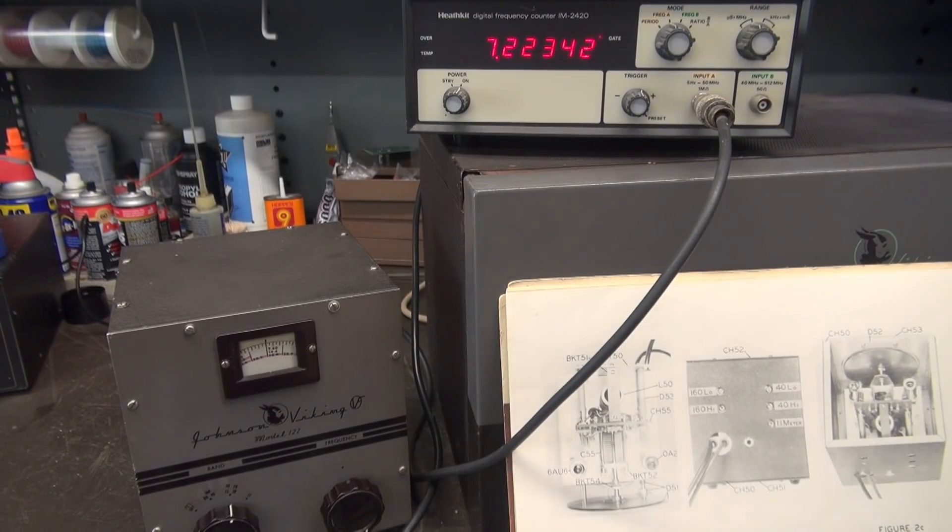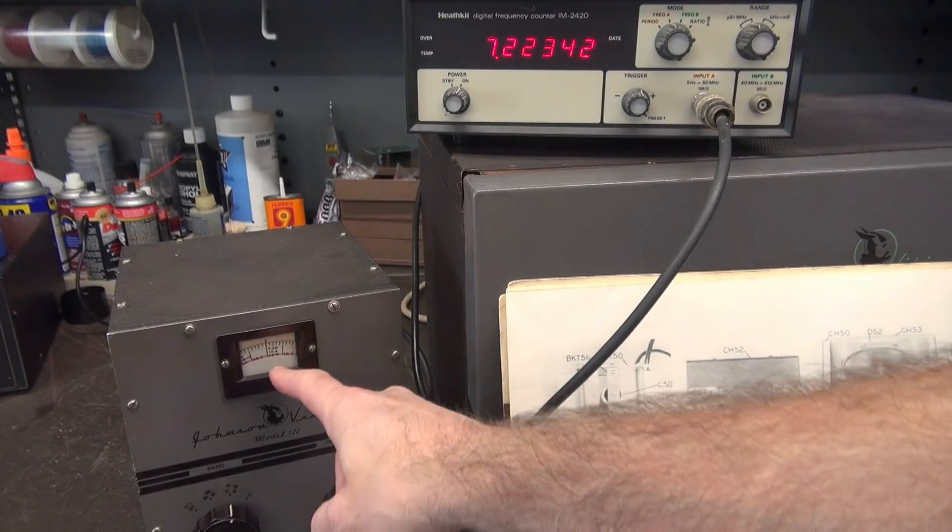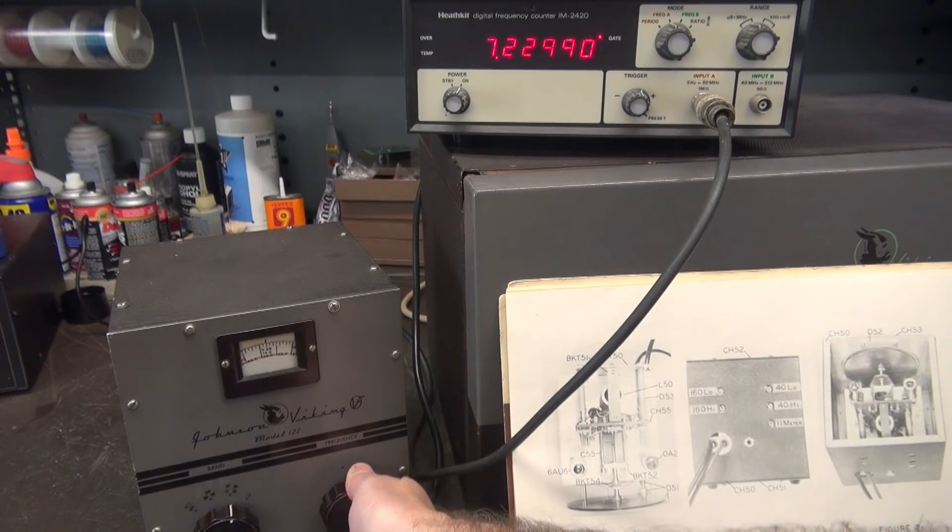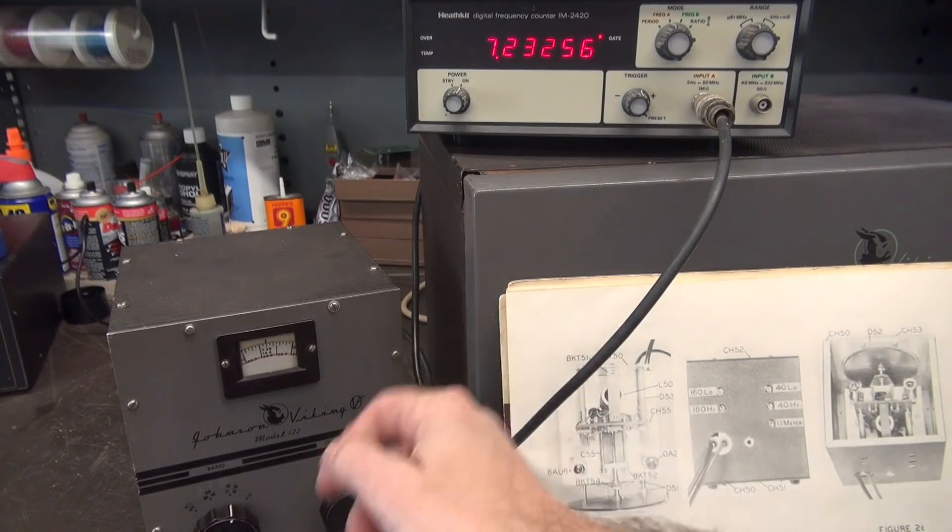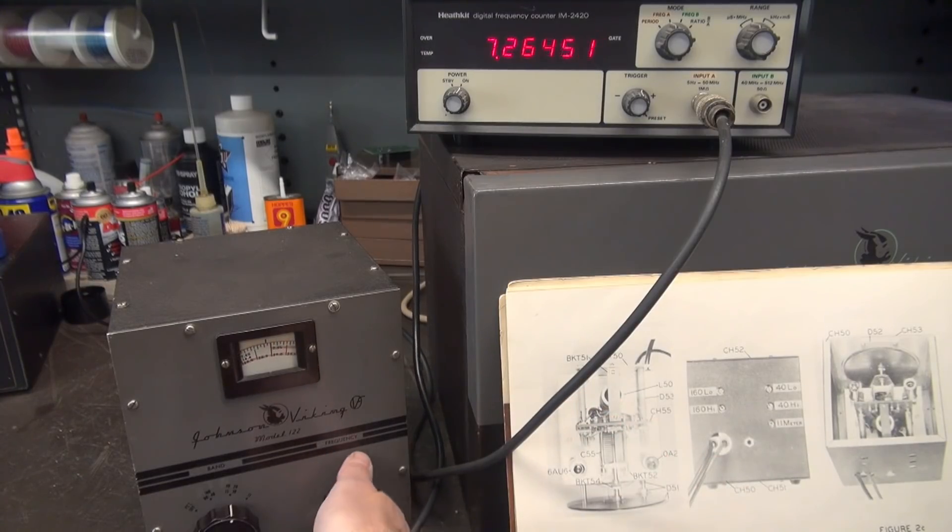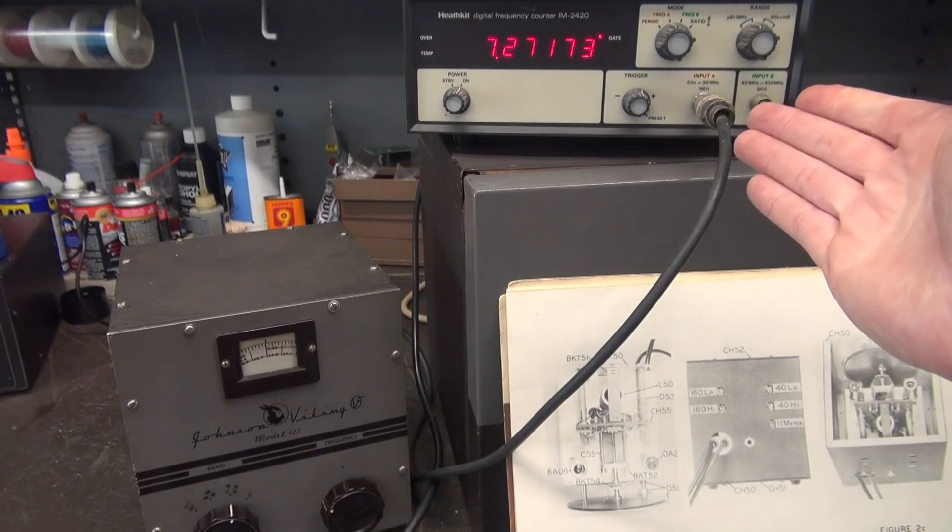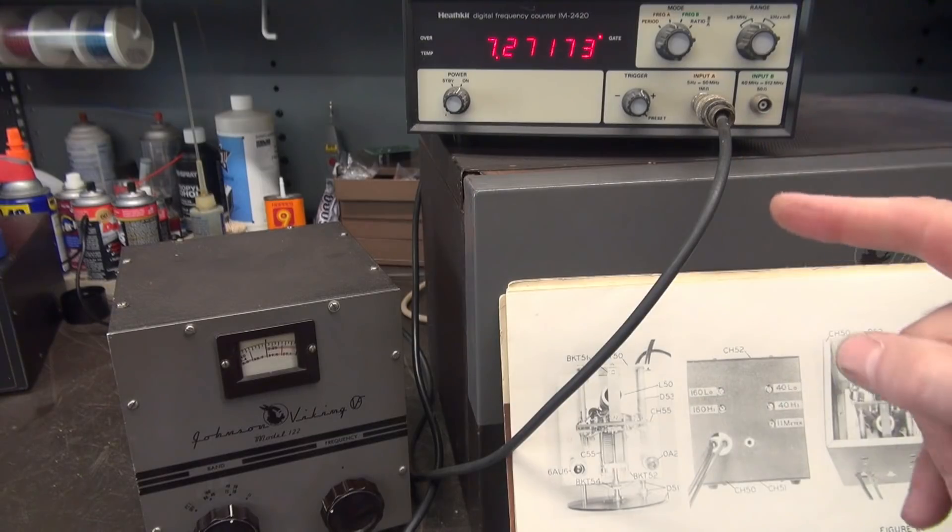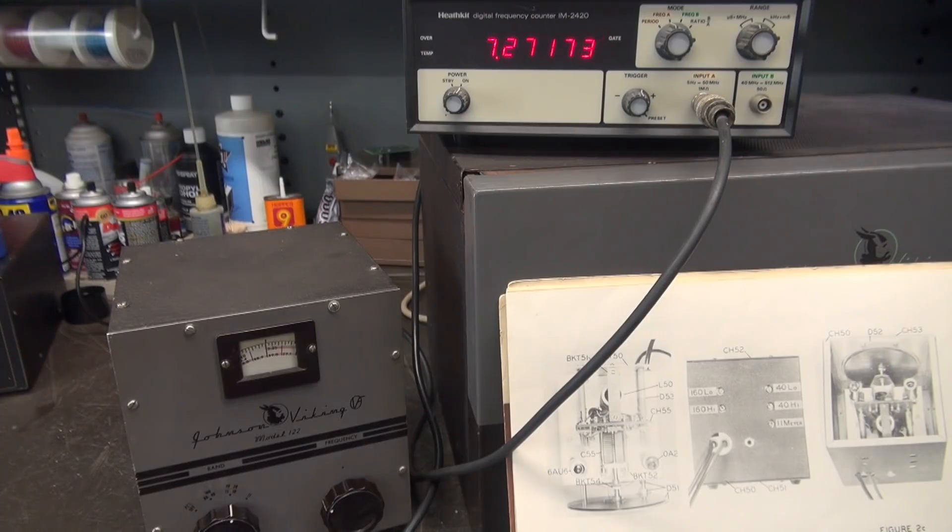All right, same deal. I'm on 40 meters, approximately 7.2 megahertz. You can see we're a little high, so you could get back there and adjust your 40 low and high trimmers and tune that in. Same deal, you can just watch it on your frequency counter.